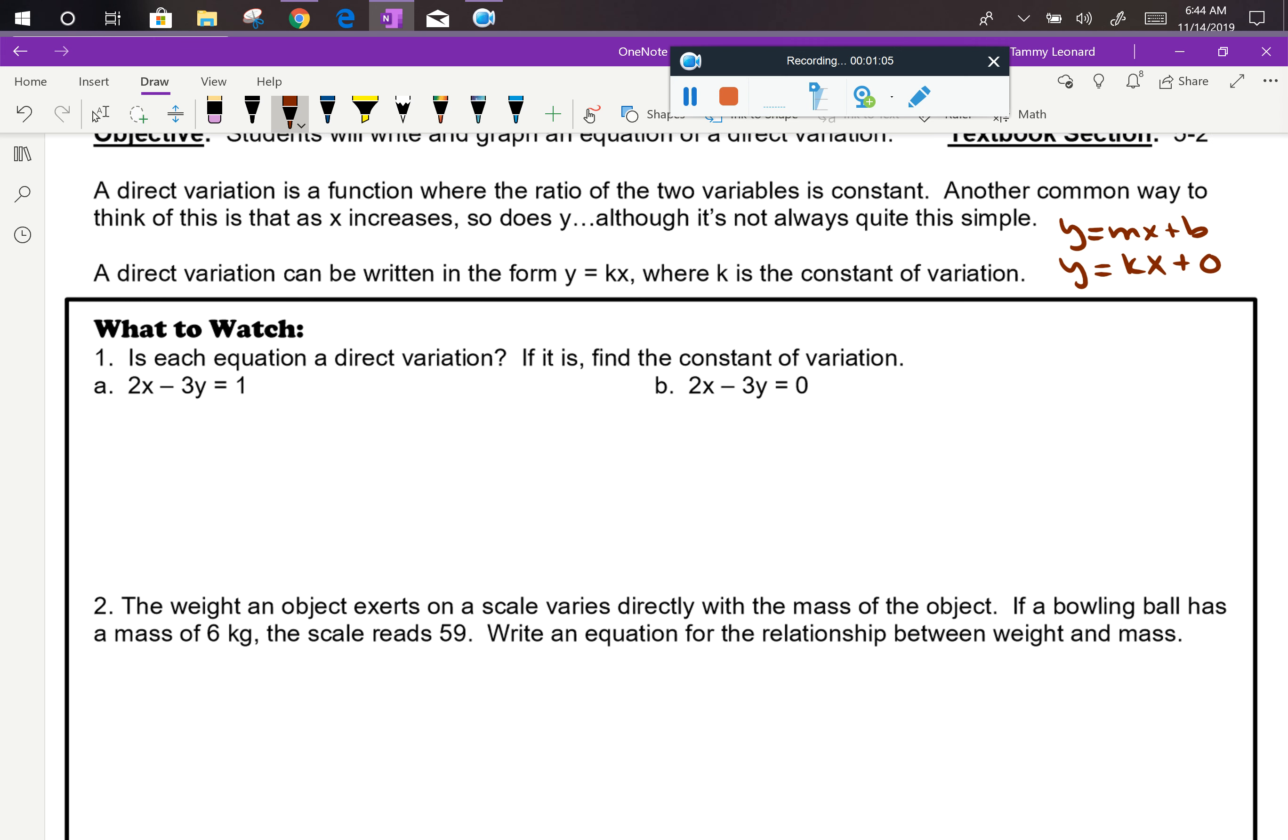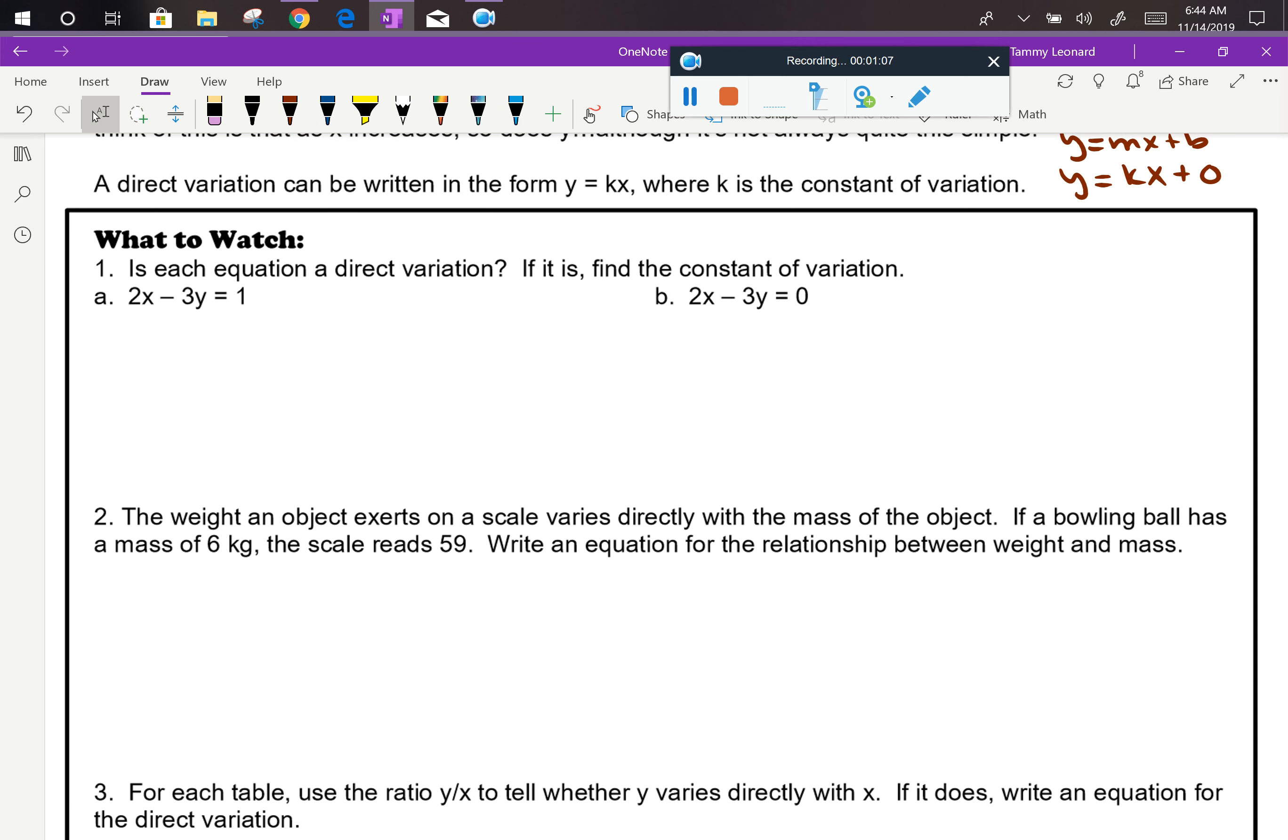One of the things we're asked to be able to do is to determine by looking at an equation whether or not it represents a direct variation. And then if it does represent a direct variation, we're asked to find the constant of variation. We can see that the direct variation form is y equals kx, which means that we always need to solve for y in order to determine if something is a direct variation.